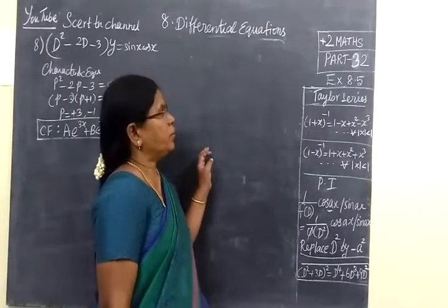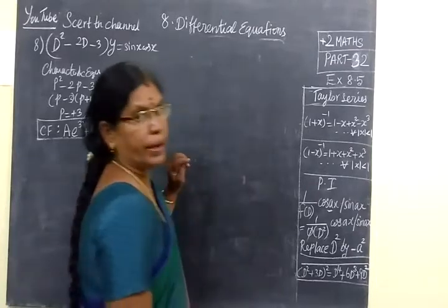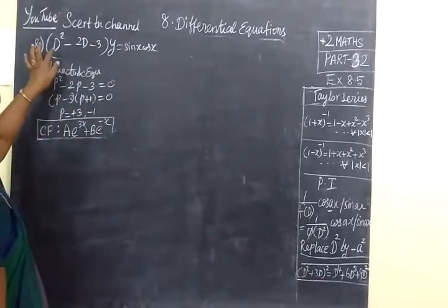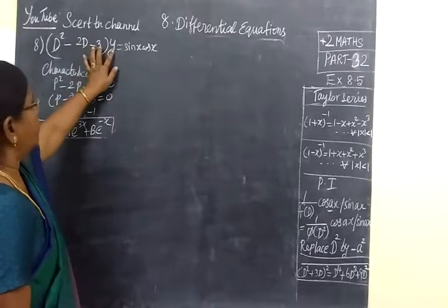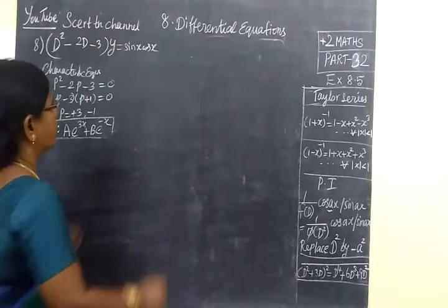Now, today we see part 32, exercise 8.5. So, D squared minus 2D minus 3 of Y equals sin X cos X.